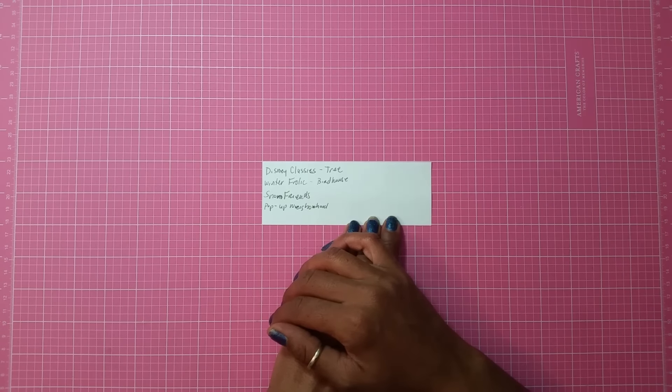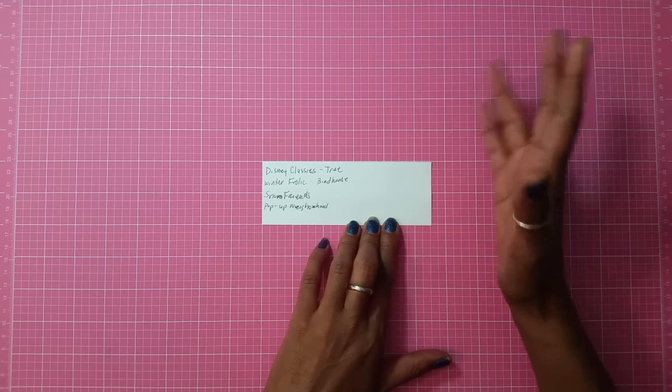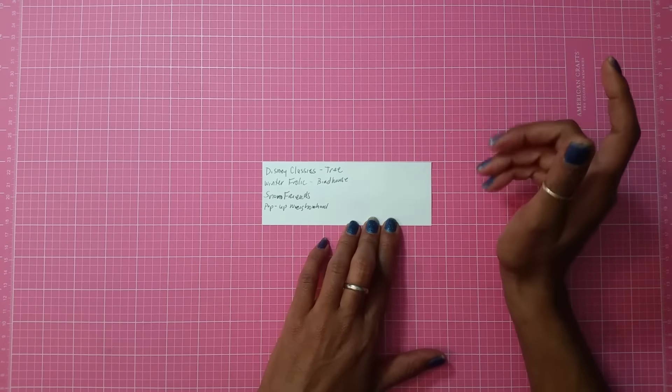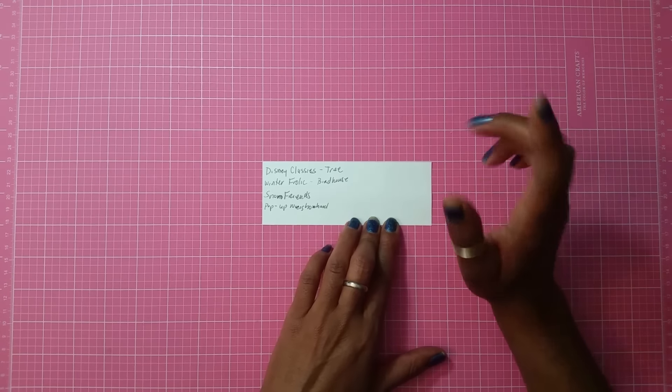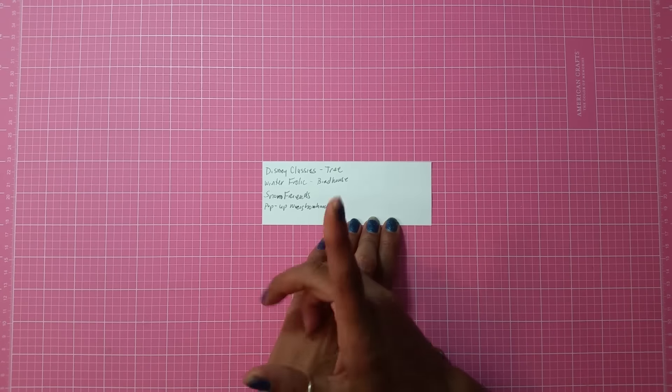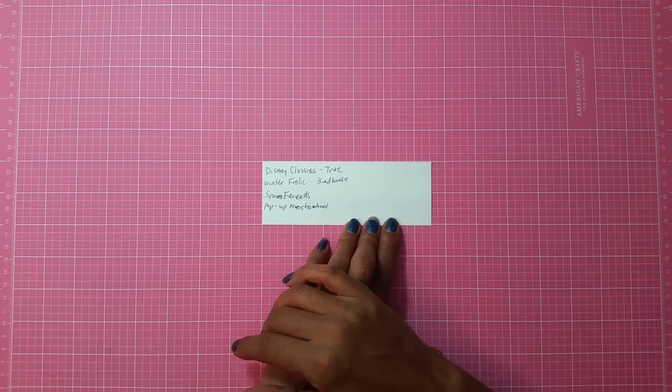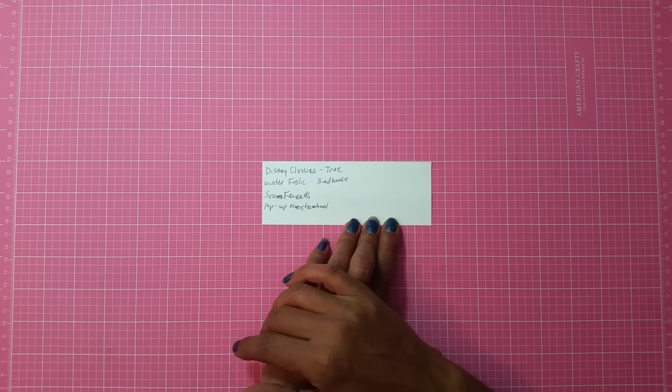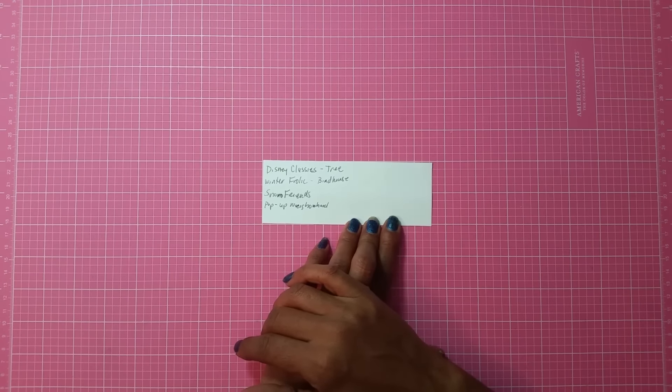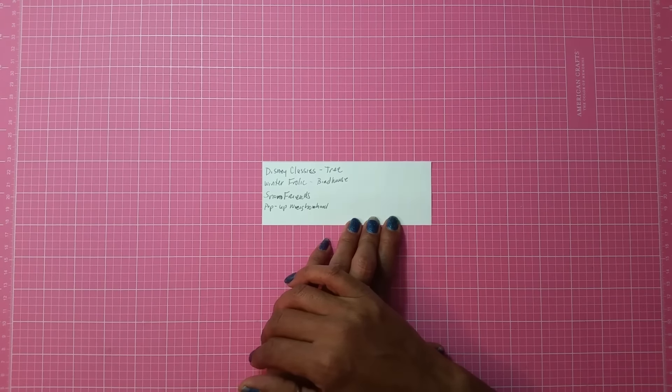You can use universal blades for it so you don't have to get the Cricut blades for it. Like the German blades, you can order some on eBay and you get like five blades for the price of what you would get for one.